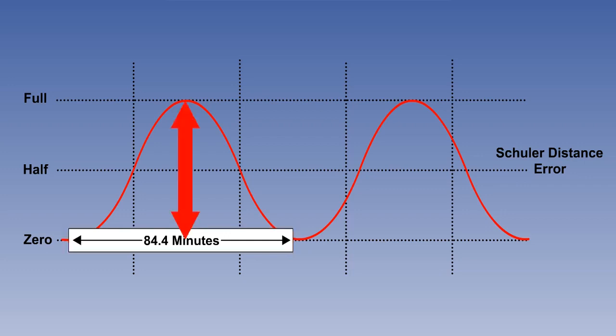The maximum value of the Schuller error does not increase with time. Whatever the amplitude of the first cycle, all subsequent cycles will have the same amplitude. The oscillation is self-sustaining because the system is resonating at its natural frequency.